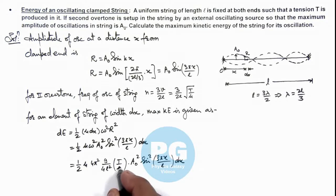Here you can see this μ gets cancelled out and 4 also gets cancelled out. So the value of this dE we are getting is 9π²T A₀²/(2l²) multiplied by sin²(3πx/l) dx.